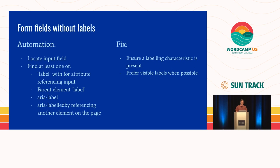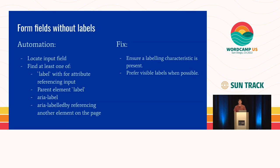Form fields without labels are just as easy for automation to find as missing alt attributes — it's all about finding those element associations. Does this form field have an explicitly associated label, an element wrapper, or an aria-label? You have to make sure those labels are present and accurate. Accuracy is not something automation can do — it doesn't know what type of email you should get or what a name field is. But it can certainly tell you that there is a problem.